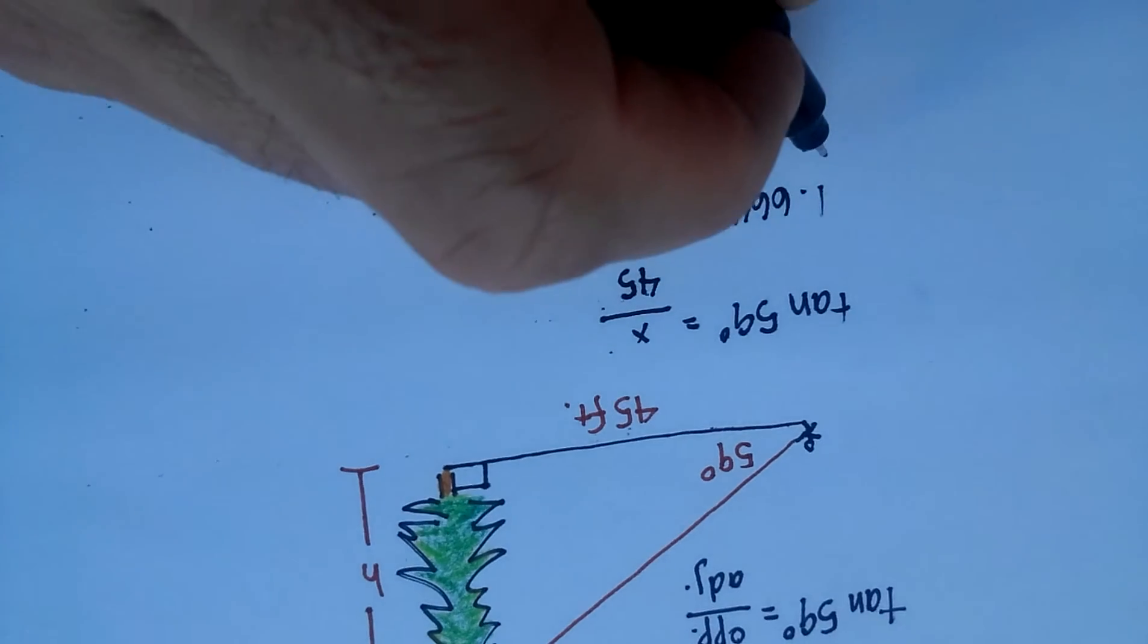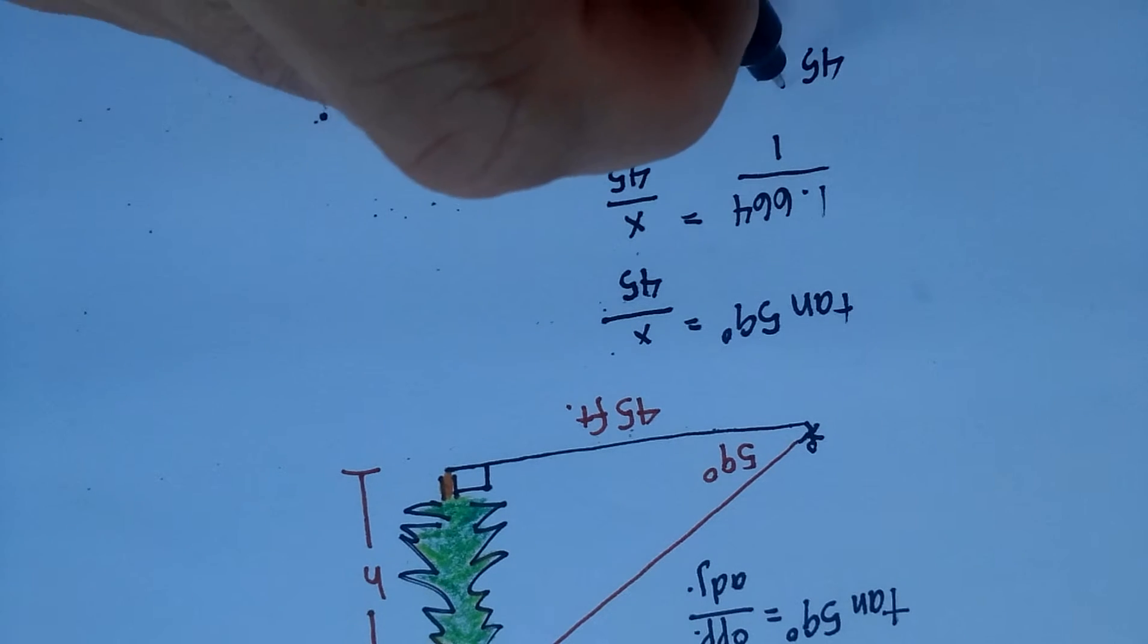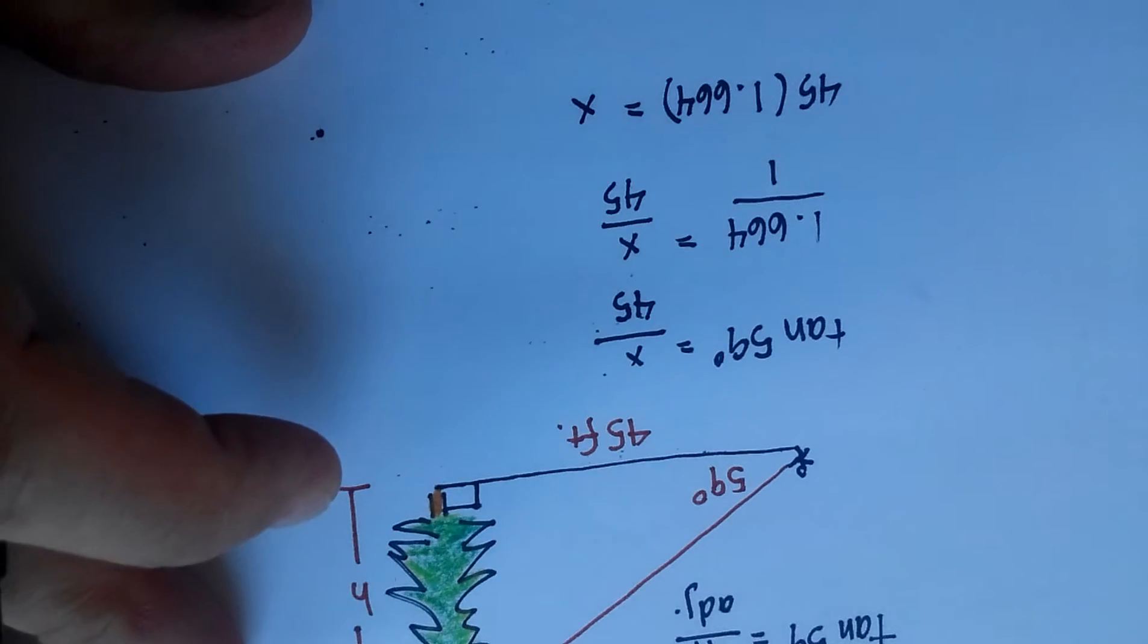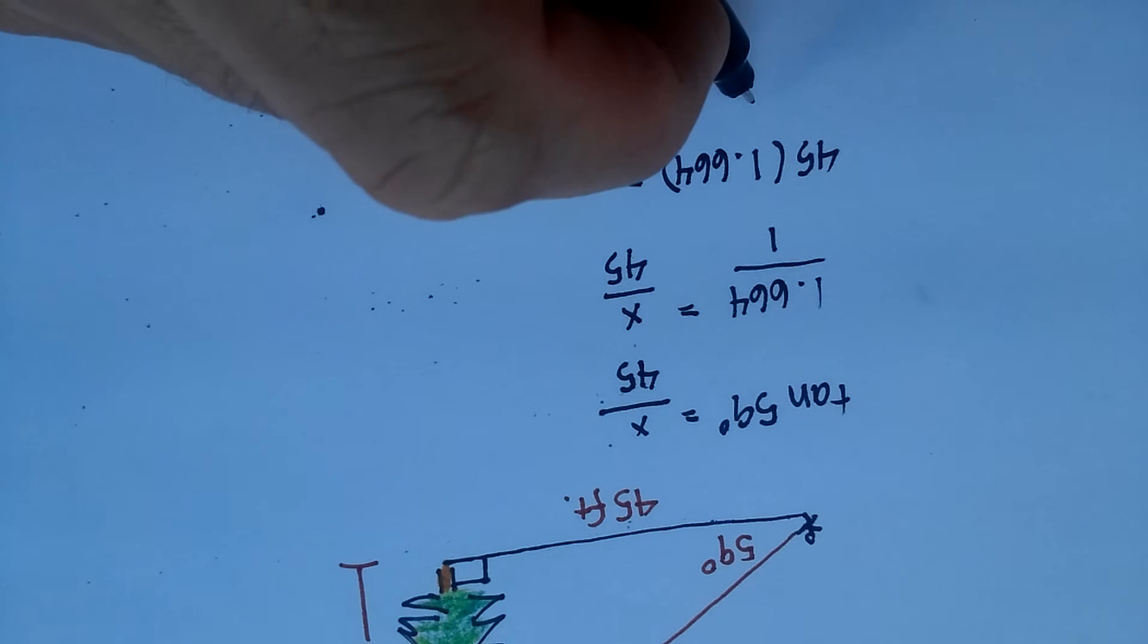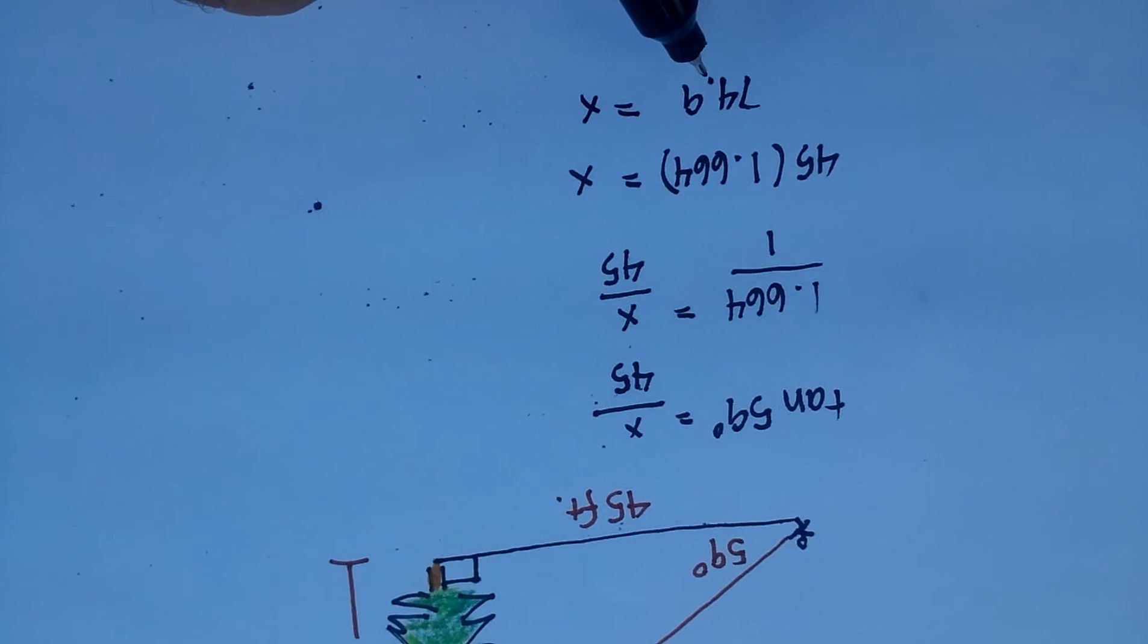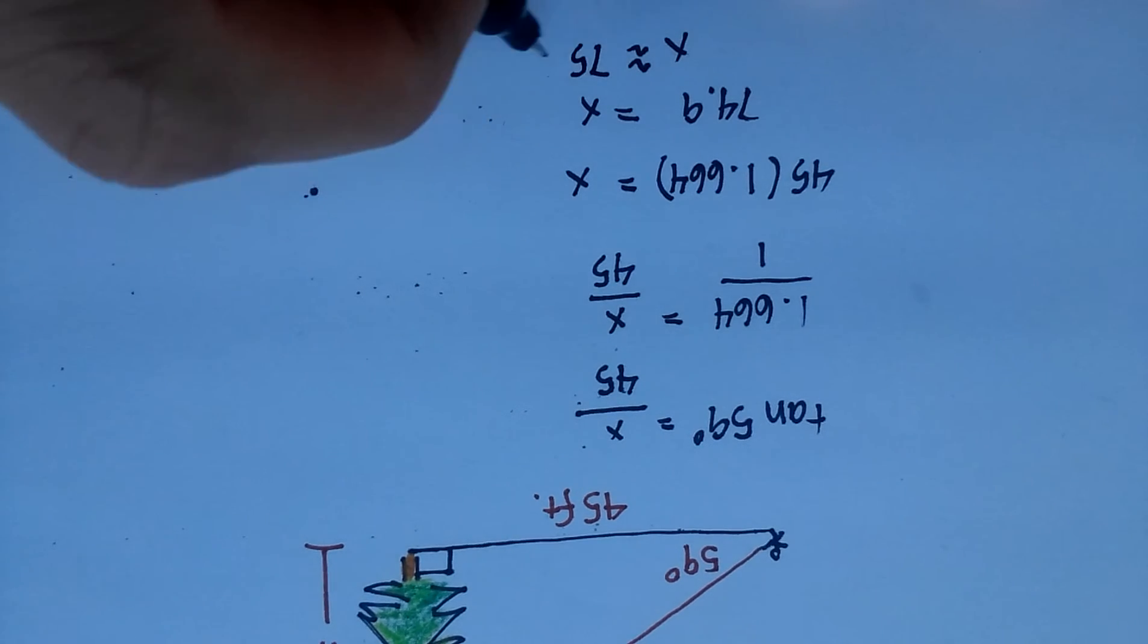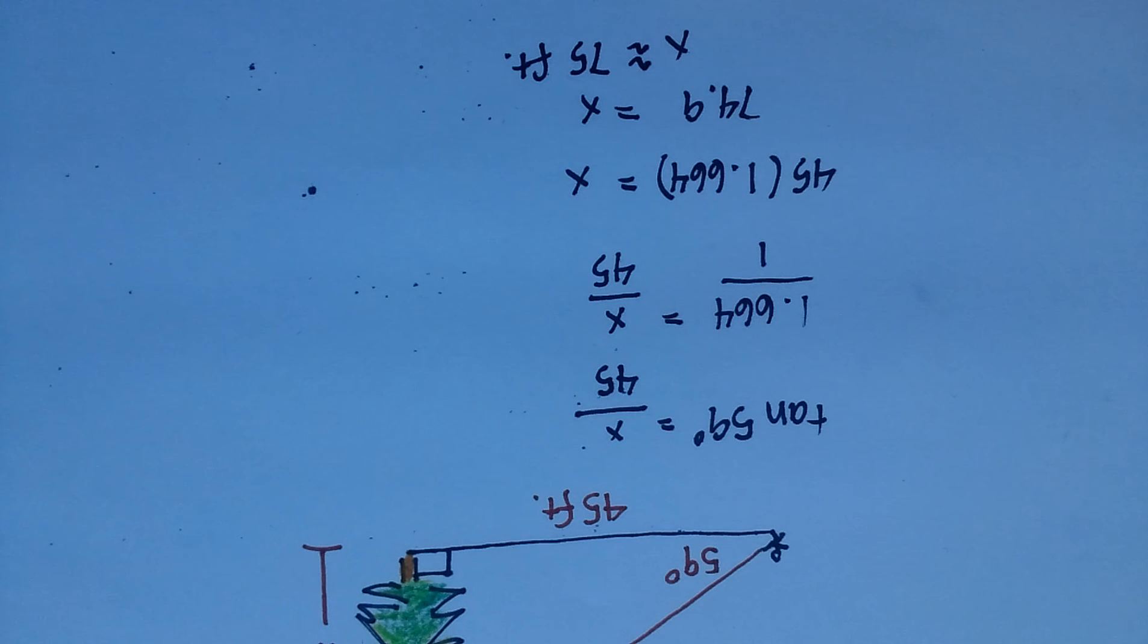So that's how you solve these. You can do cross products. You get 45 times 1.664 equals x times 1, and that gives you 45 times 1.664 equals 74.9 equals x. That would be the height of the tree in feet. So x is approximately 75 feet, and that's one way of estimating the height of the tree. I hope that was helpful.